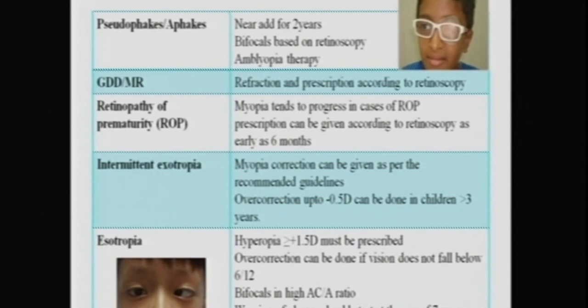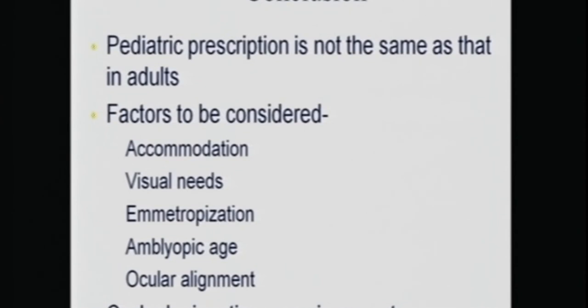For children with developmental disorders or delayed milestones, it is very important to prescribe as per retinoscopy because you are often unable to perform subjective testing. To conclude: pediatric prescription is not the same as in adults. Important factors to consider are accommodation, visual needs, emetropization, the age, the amblyopic sensitive period up to six to seven years, ocular alignment, and a cycloplegic retinoscopy is a must.